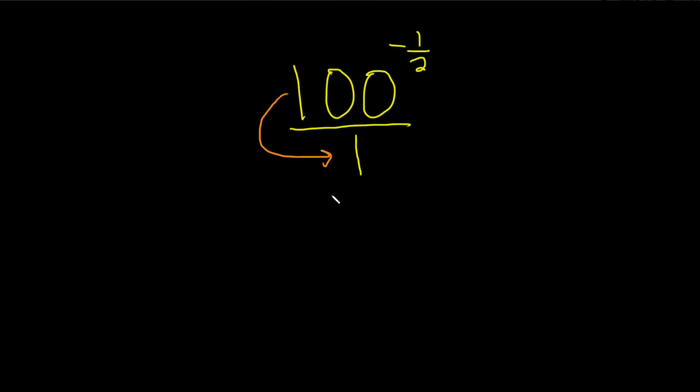When we do that, we're left with 1 up top. And on the bottom we have 100. Then this will become positive, so we get 1/2.